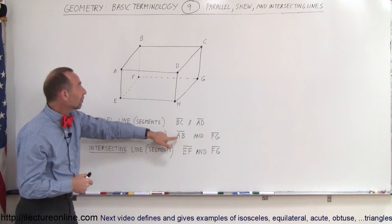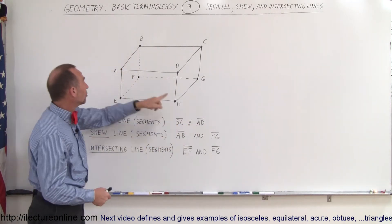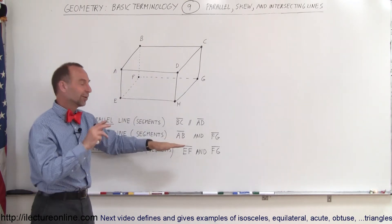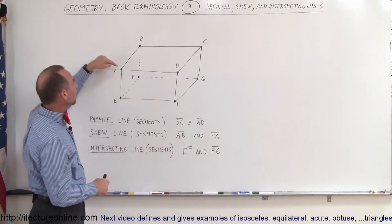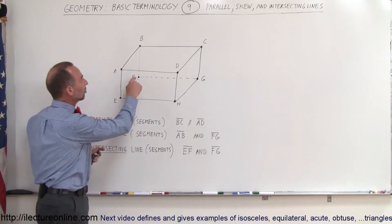For example, we have the line segment from A to B. Oh, I'll take that back. I'm on the wrong row here. We have line segment A to B and line segment F to G, which is this one right here.